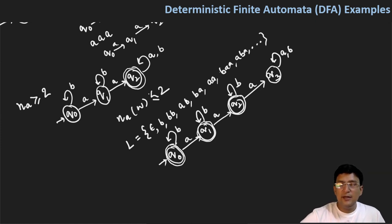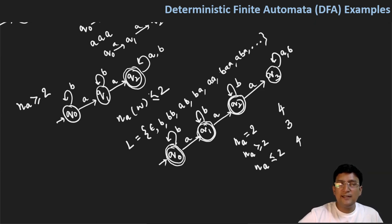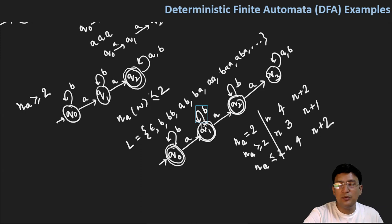To summarize: if the number of A's in the string is exactly two, then the number of states in the automata is four. If the number of A's is greater than or equal to two, the number of states is three. If the number of A's is less than or equal to two, the number of states is four. To generalize: if the number of A's is exactly n, the number of states is n+2. If greater than or equal to n, it's n+1 states. If less than or equal to n, it's n+2 states. This will help you in solving GATE problems as well.